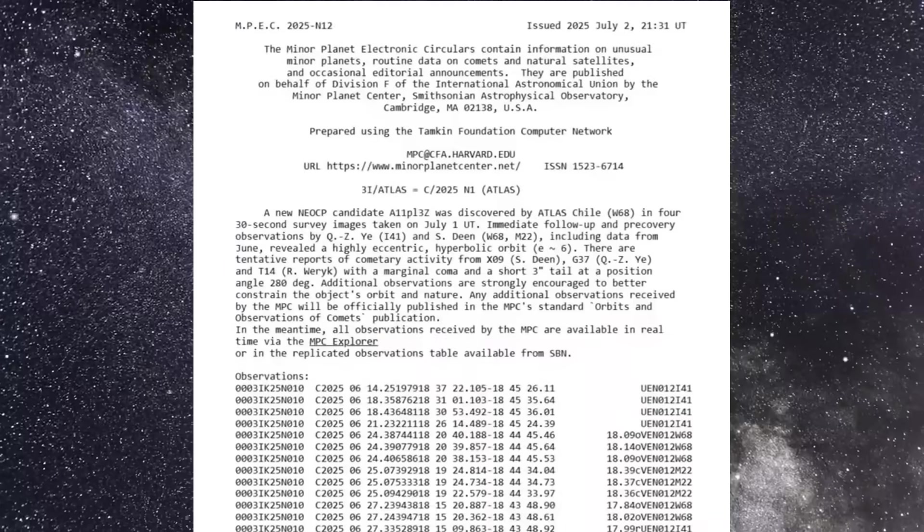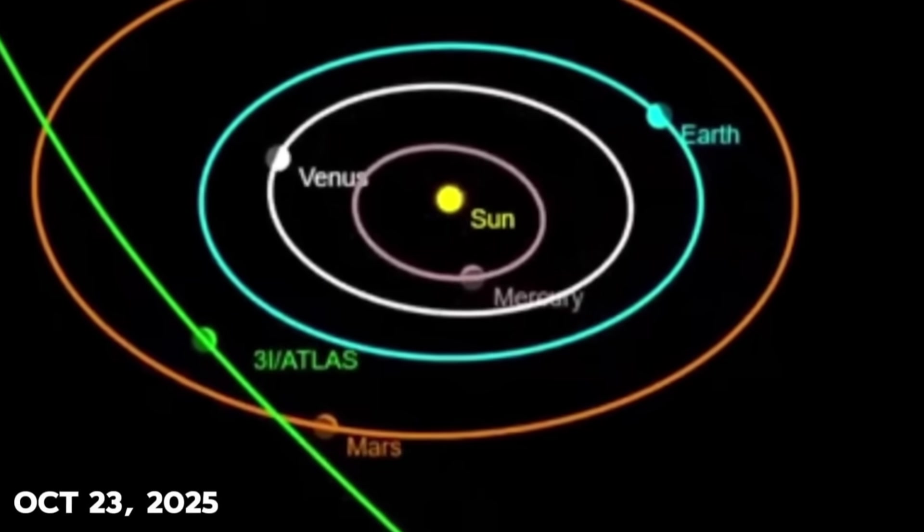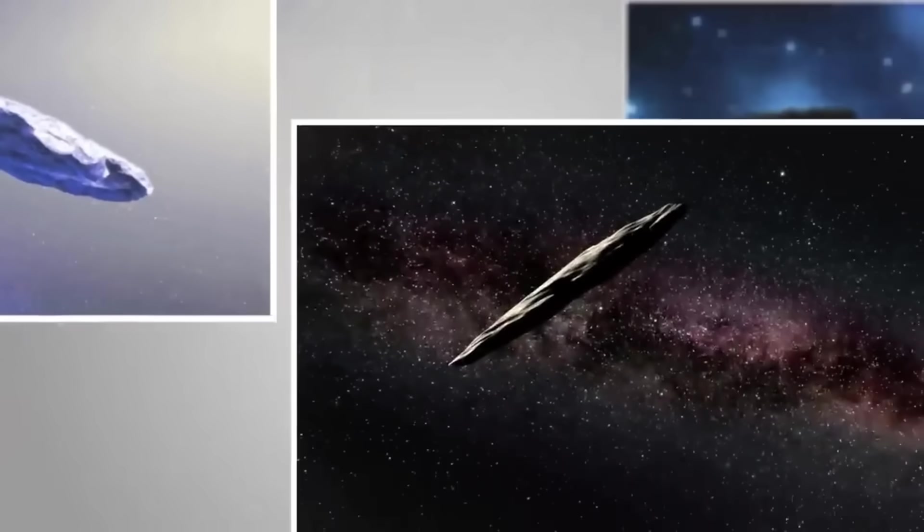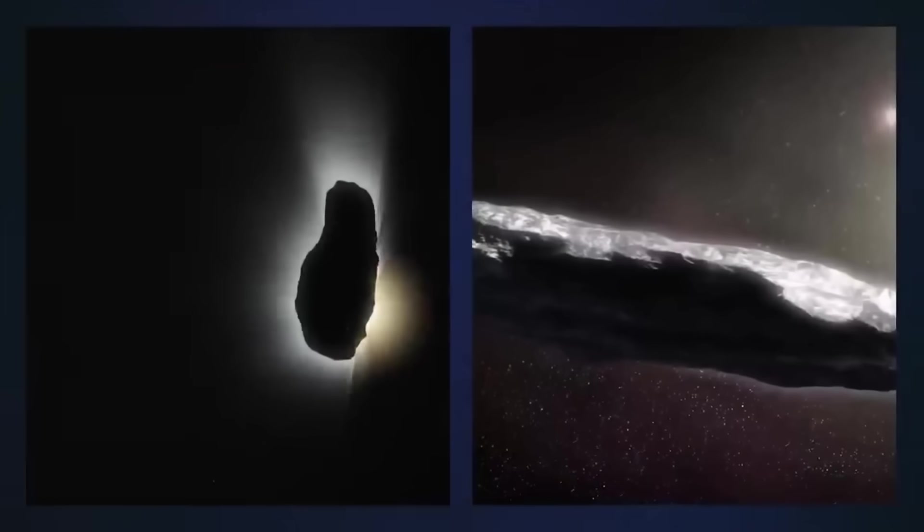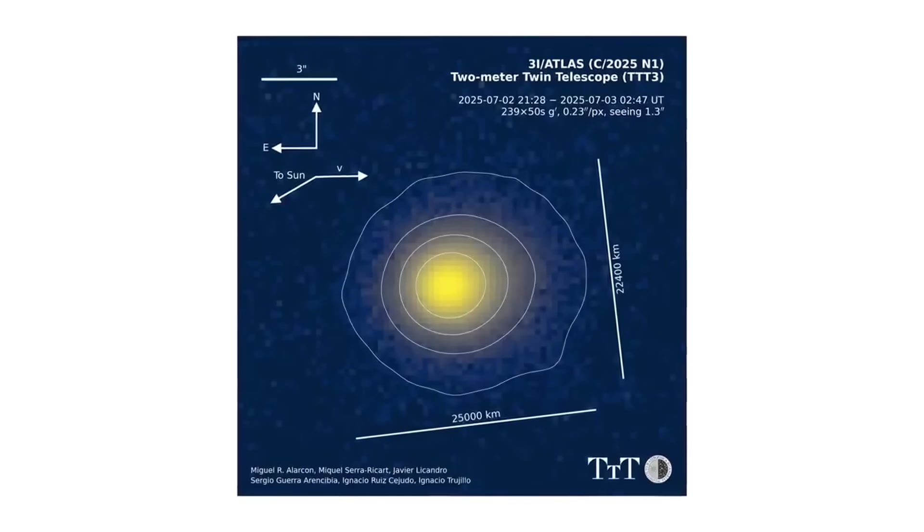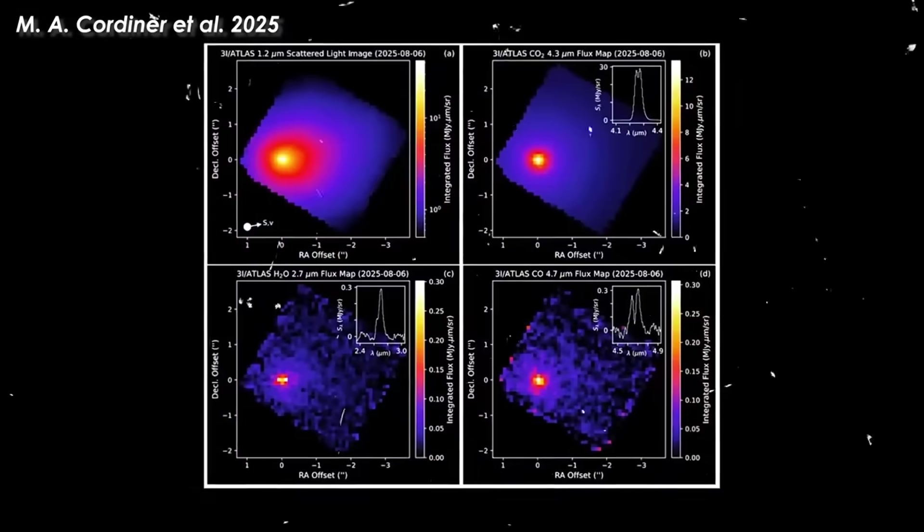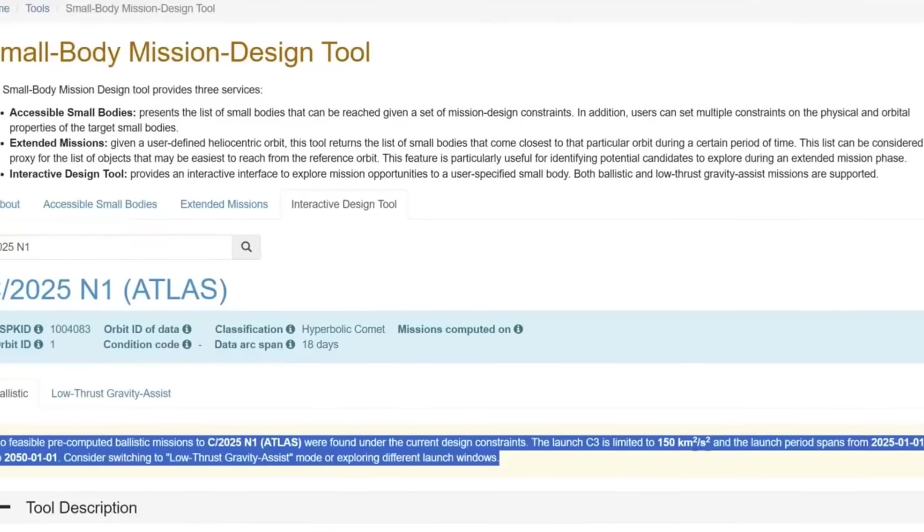The discoveries of Oumuamua and now 3i/ATLAS have triggered a scientific revolution in how we search for and study these messengers. The upcoming Vera C. Rubin Observatory in Chile, featuring a massive 3.2 gigapixel camera, will systematically scan the entire sky night after night. Simulations indicate this telescope could detect one or more interstellar objects per year. Perhaps dozens if smaller objects are common. And crucially, Rubin will spot them on their way in, not after they've already passed by like Oumuamua. This advance warning is transforming our approach from passive observation to active interception. The European Space Agency has approved the Comet Interceptor mission, scheduled for launch in 2029. This innovative spacecraft will wait at a Sun-Earth Lagrange point, ready to deploy when a suitable target appears. The mission includes a main spacecraft and two sub-probes that separate to provide multiple viewing angles, giving us the first close-up look at a pristine visitor from another star. For the first time in history, we're preparing not just to watch these messengers, but to meet them up close.